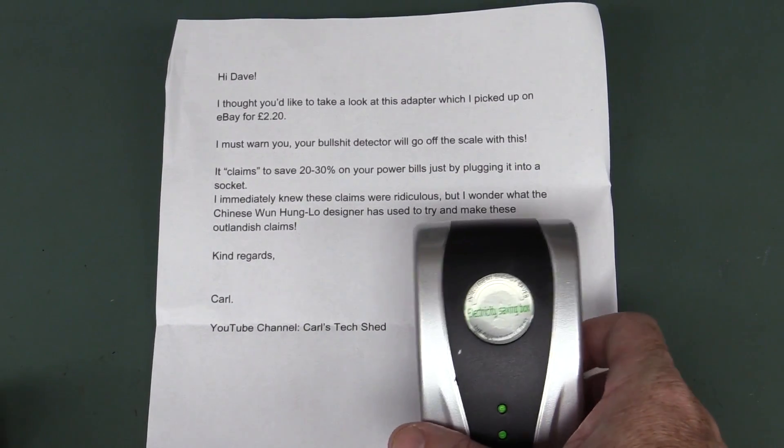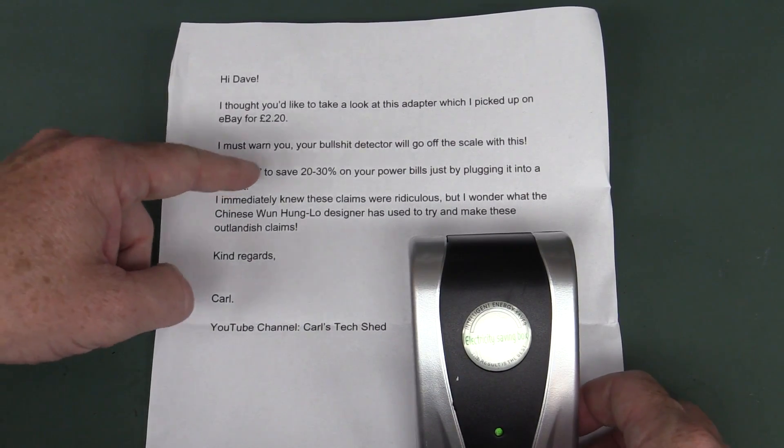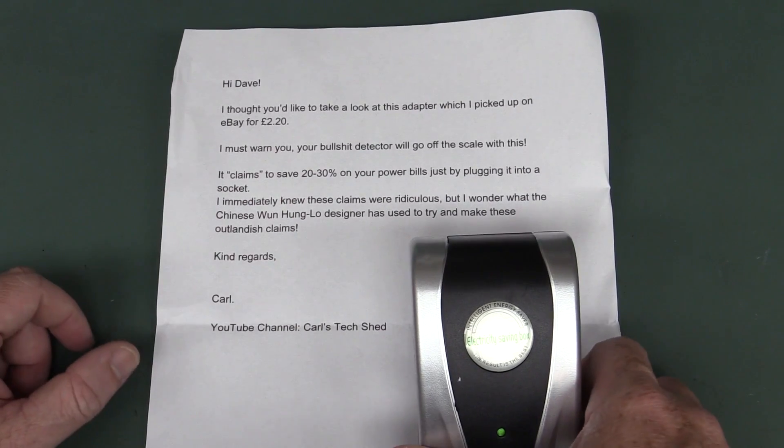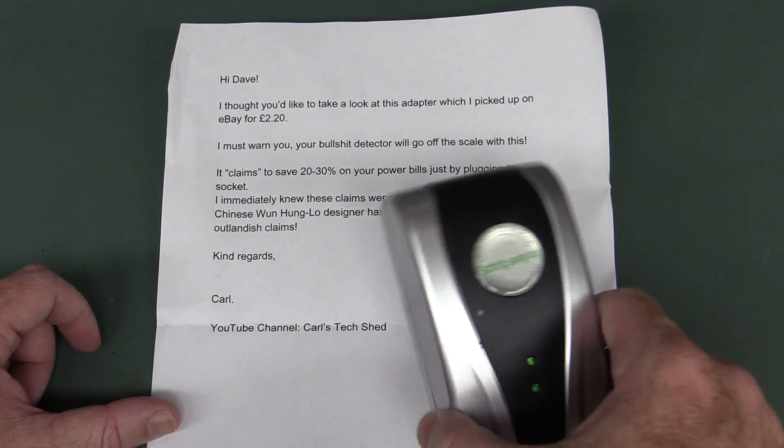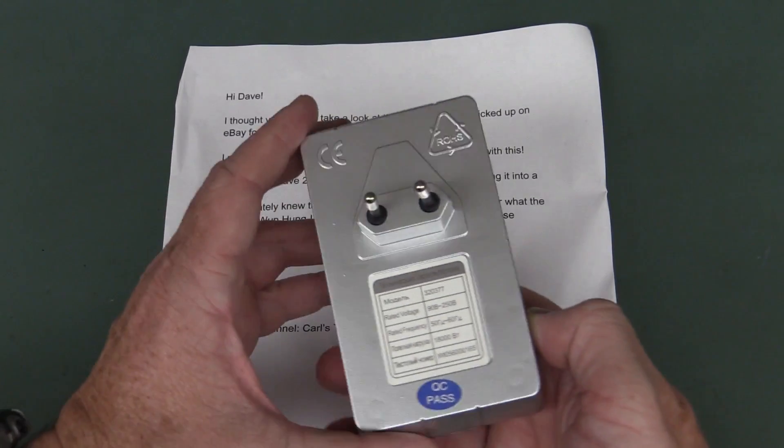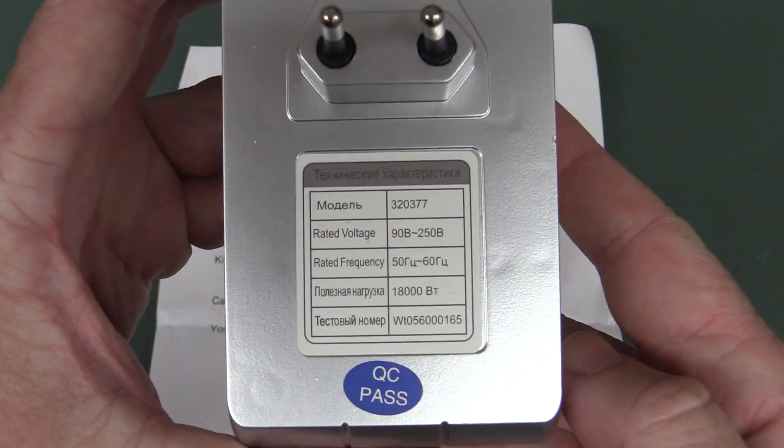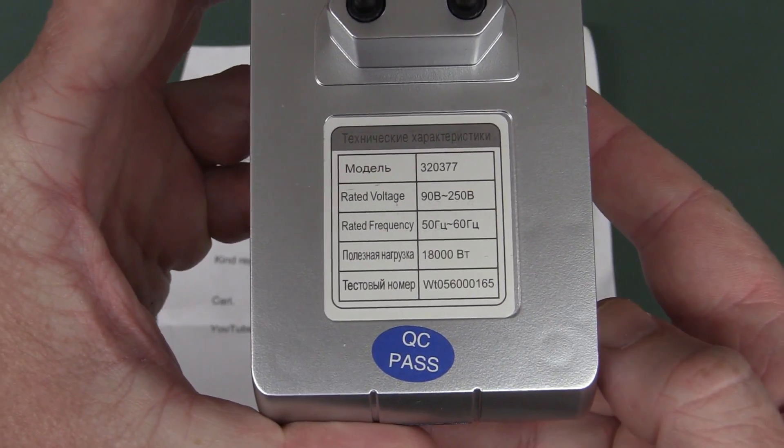Electricity saving box. Carl reckons that you can save, well, the claim is that save 20 to 30 percent of your power bills just by plugging the stupid thing in. Ah, you've got to be shitting me.